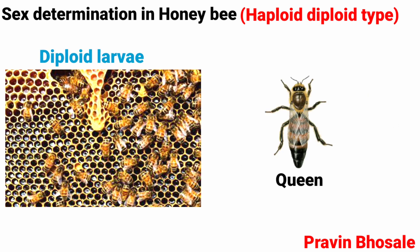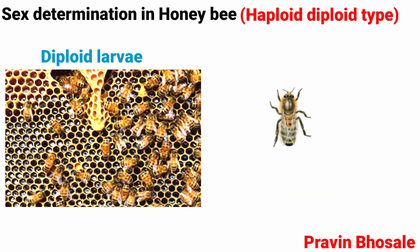The diploid female gets differentiated into either a worker or a queen depending on the food consumed during development. Diploid larvae that receive royal jelly as food develop into queens, i.e., fertile females, while others develop into workers, which are sterile females.